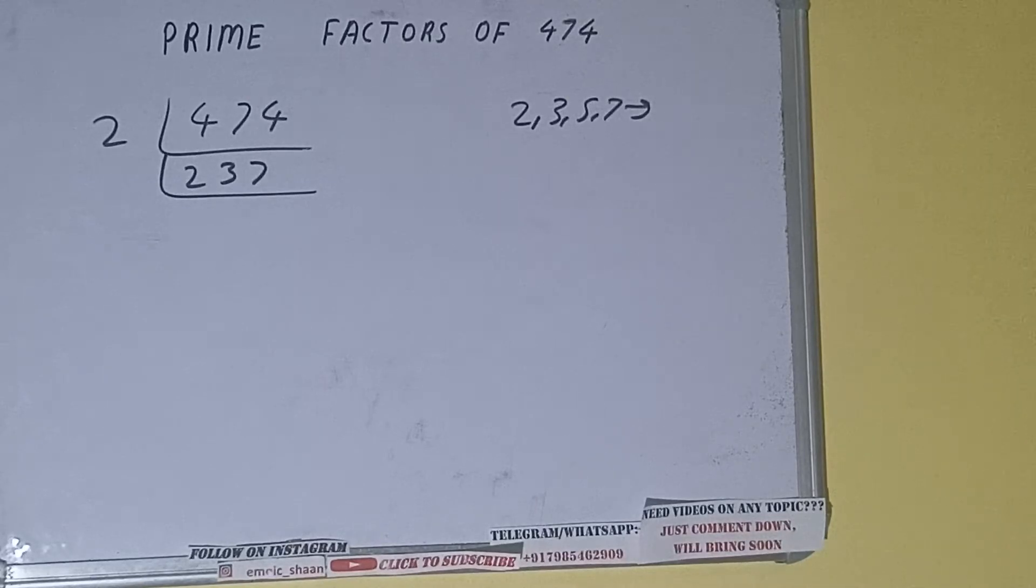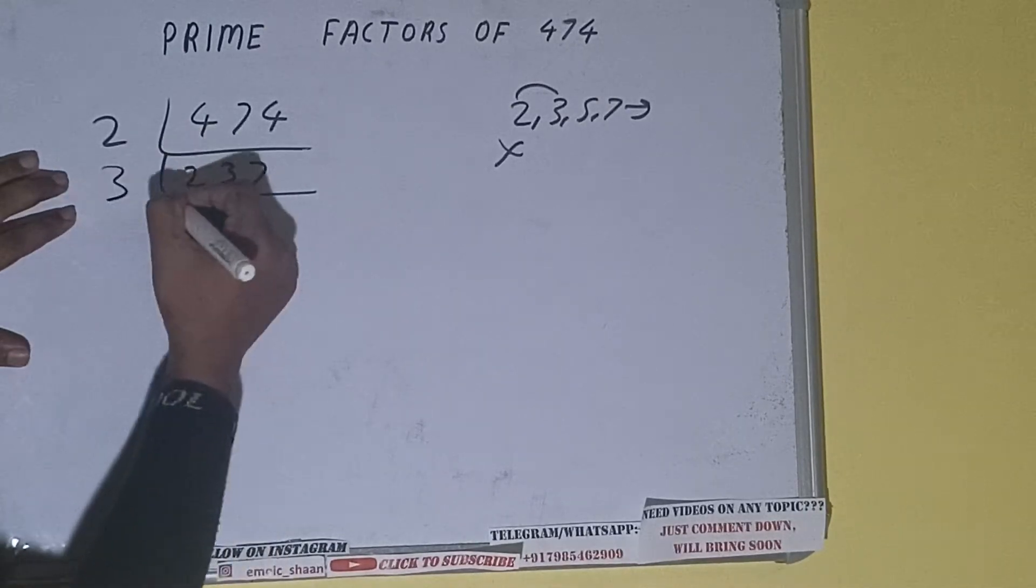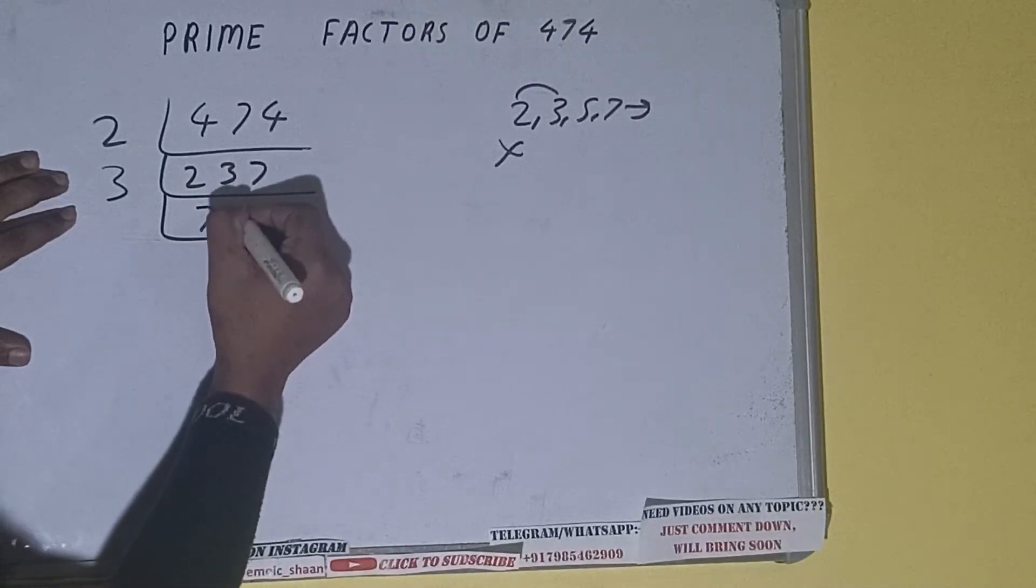So we'll be checking with the next lowest prime number, that is 3. 3 7s are 21, 237 is divisible by 3. So divide it. 3 7s are 21, 3 9s are 27.